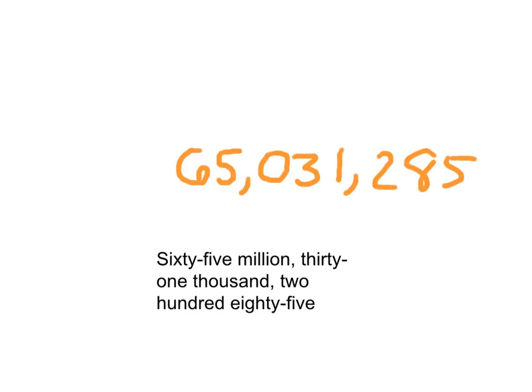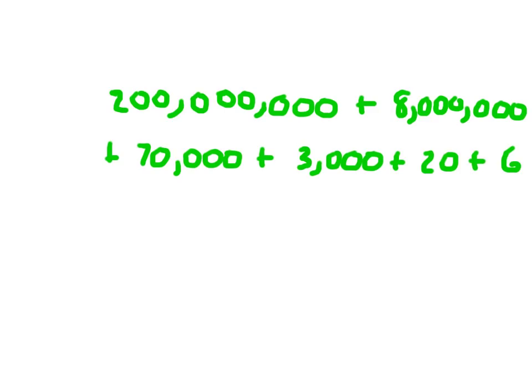This is the word form of that number, and this is the expanded notation. I might be asked to write it back into standard form — just the digits. I look for the largest value: there's one worth 200,000,000, so I write a 2 in the 100,000,000s place. In the 10,000,000s place there's no number, so I put a 0. In the millions place, the 8 is worth 8,000,000.